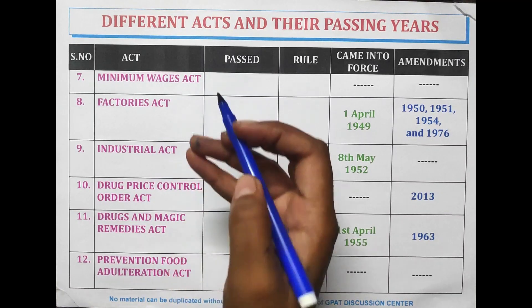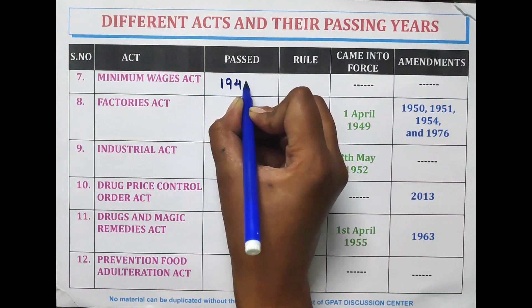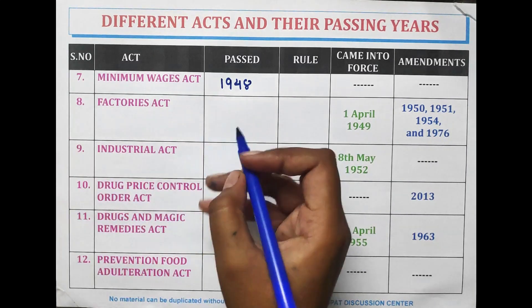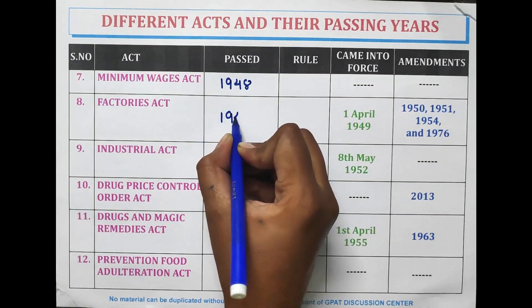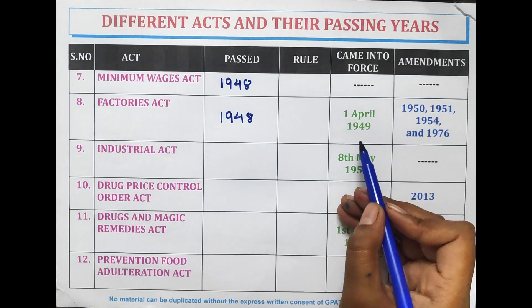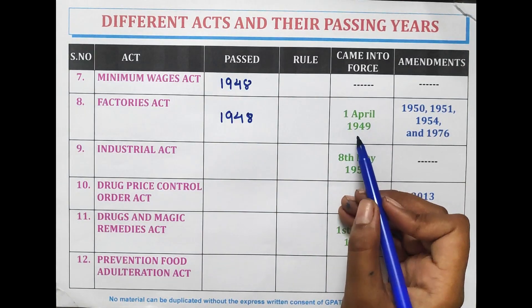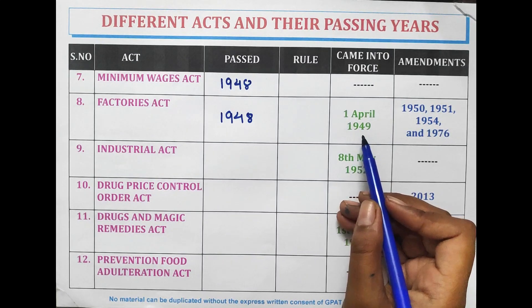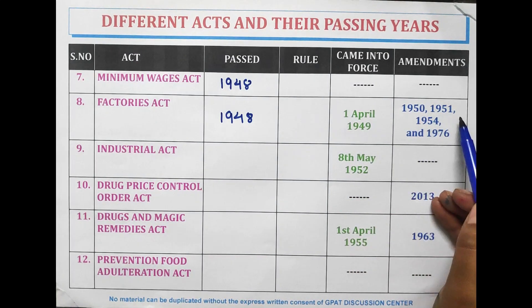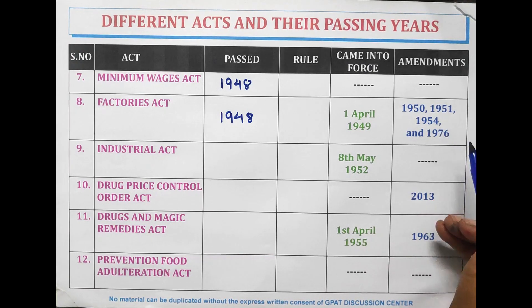The Minimum Wages Act was passed in the year 1948. The Factories Act was also passed in the year 1948 and came into force on 1st April 1949. Amendments were done in 1950, 1951, 1954, and 1976.